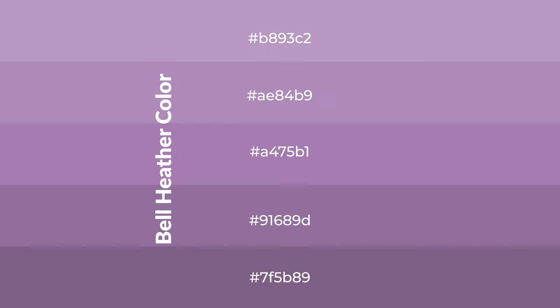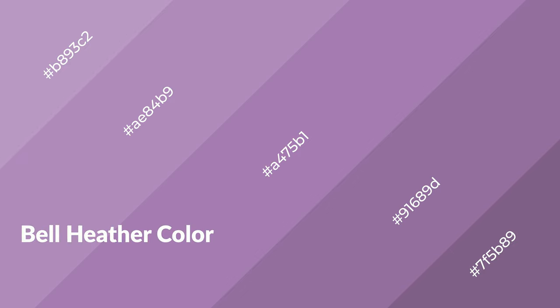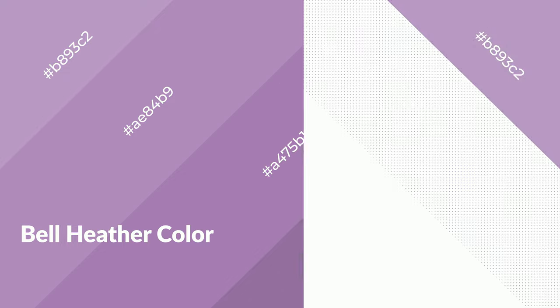To generate shades of a color, we add black to the color. Shades are used in patterns, 3D effects, and layers, and they create depth and drama. Bell heather is a warm color and it emits cozier and active emotions.